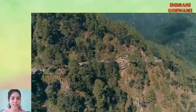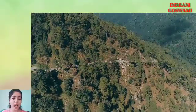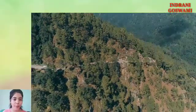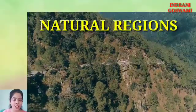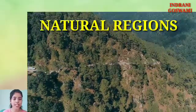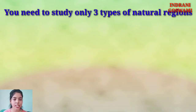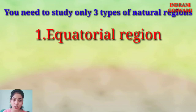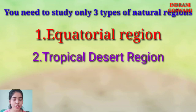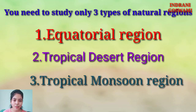Hello, dear geographers. Today in this class I am going to discuss the last chapter of Class 9 ICSC, which is Natural Regions. In the revised syllabus, natural regions have been cut down to small parts. Three basic natural regions we need to study: number one, the equatorial region; number two, tropical desert region; and number three, tropical monsoon region.